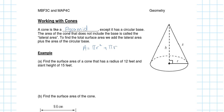The two things you need are the radius and the slanted height. The slanted height is different from the height of the cone — it's the length along the slanted side, not the vertical height through the center.